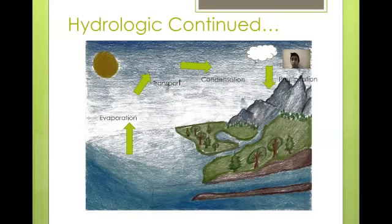The condensed water droplets in the clouds become heavier and then fall to the ground. This process is called precipitation.